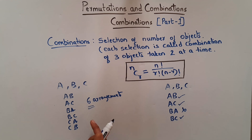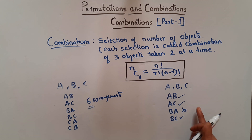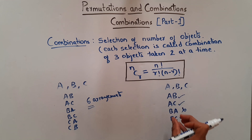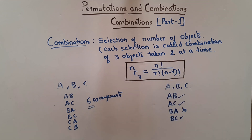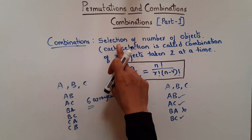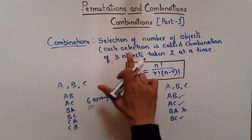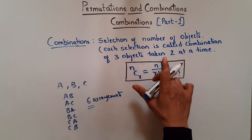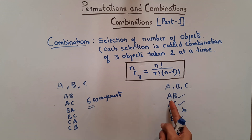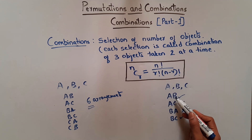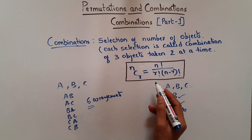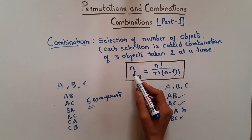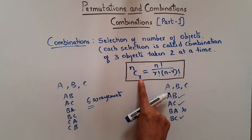This is how combinations differ from permutations — six permutations versus three combinations. A combination is a selection of a number of objects; each selection is called a combination. Here we have a combination of three objects taken two at a time, giving us AB, AC, and BC. This can be found using the formula: nCr = n! / (r! × (n−r)!), which gives the total number of ways to select r objects from n different objects.